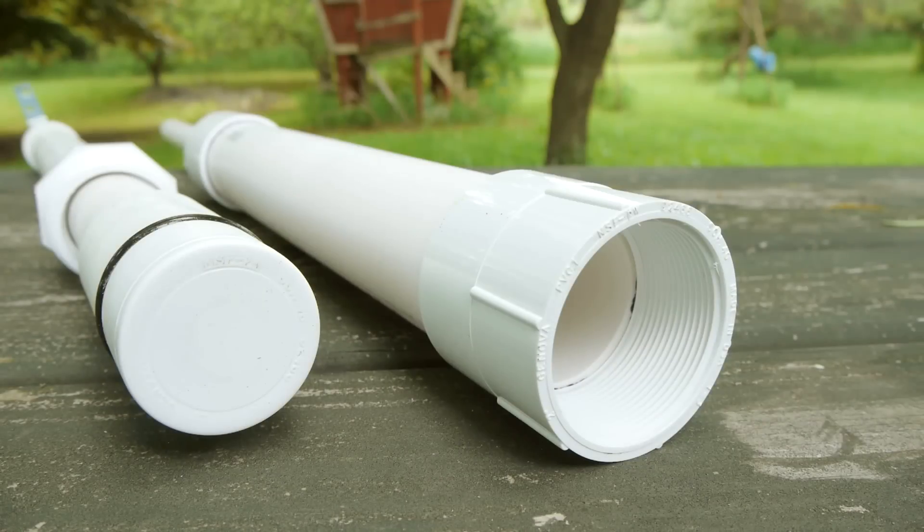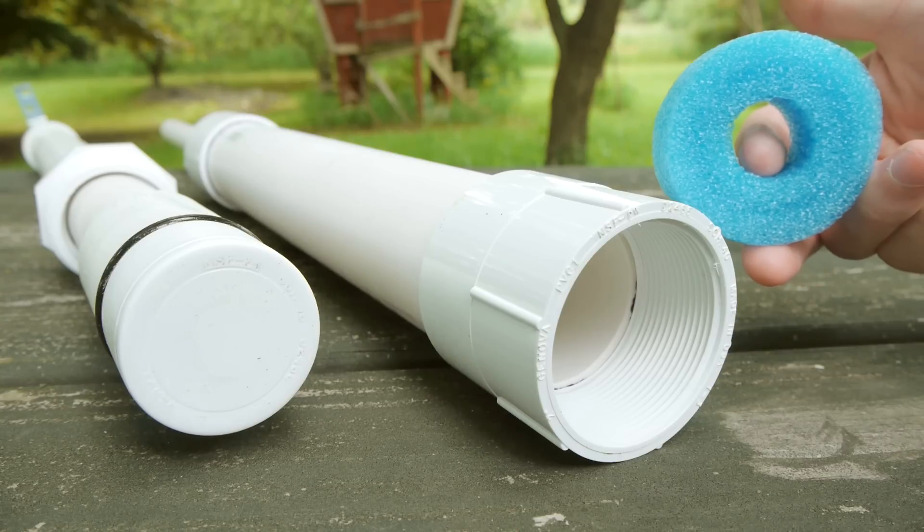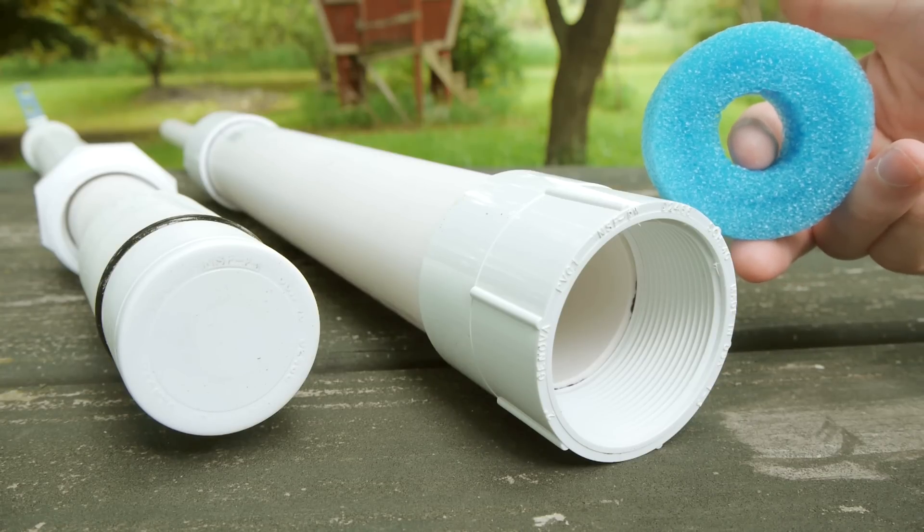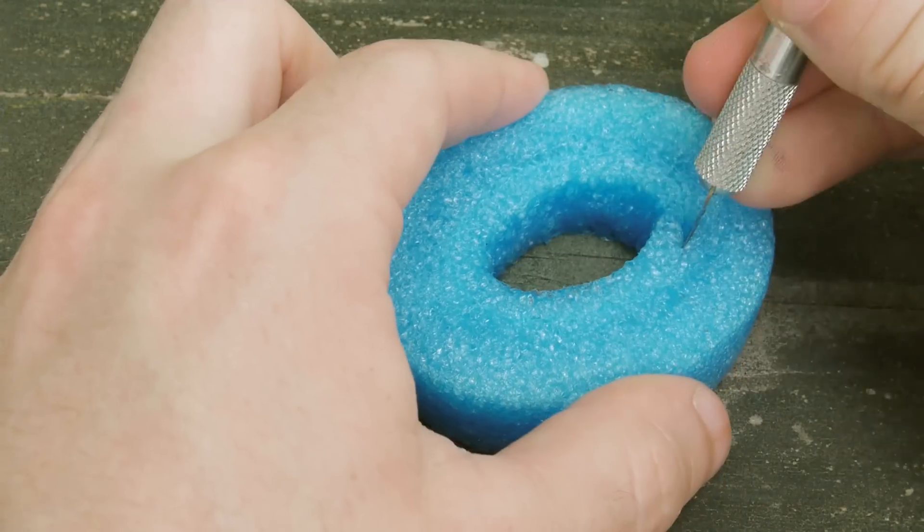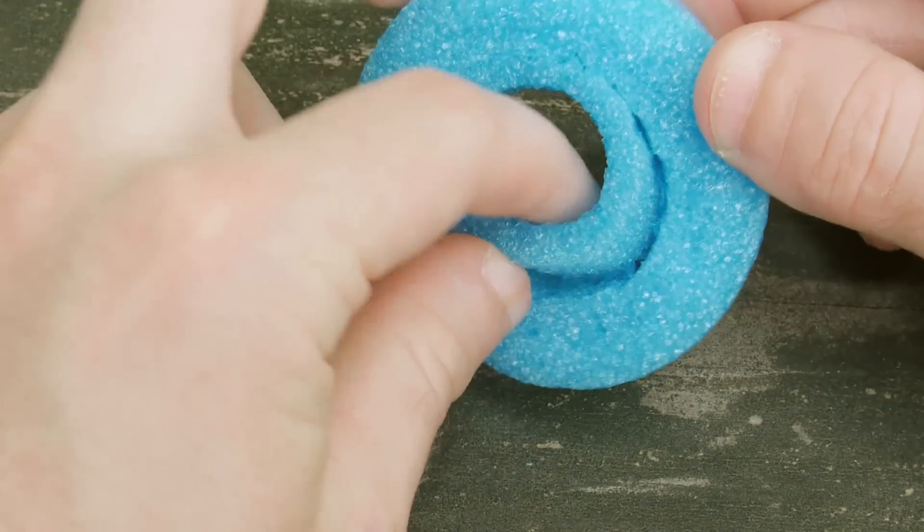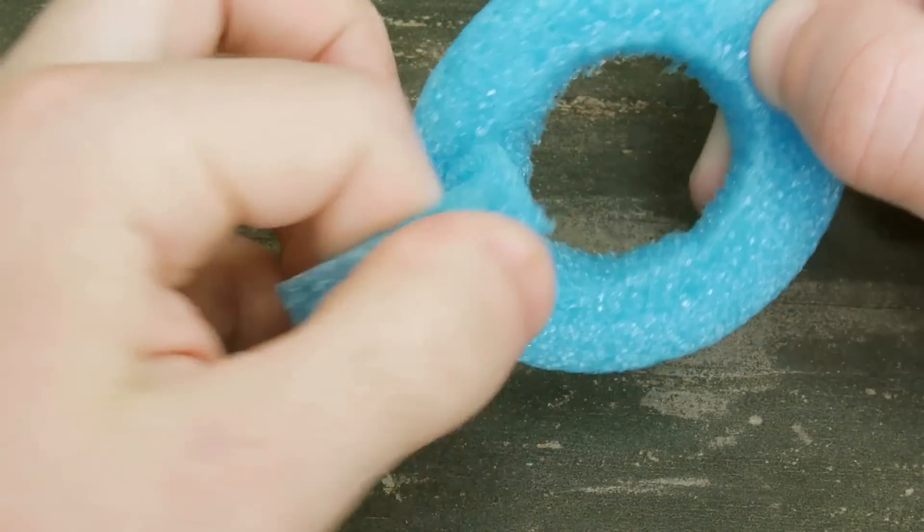The launcher is nearly complete, but there's one last step to be done before putting it all together. A short section of a foam pool noodle is prepared as a bumper for the piston, by widening the hole in the center slightly to allow more air to pass. I'll be using foam noodles to make the rockets in a moment, so there should be plenty to cut this scrap from.